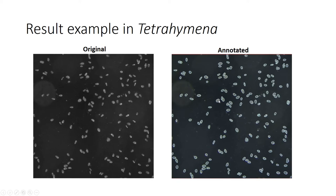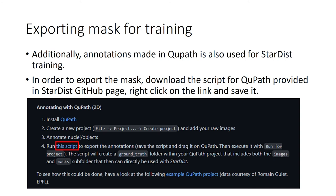This is the annotation result example. For Tetrahymena there will be an outline covering the cells you have selected. If there are cells not yet selected, you can go back to them after finishing annotating most of the cells. To use the annotation result for training in StarDist, you can open the StarDist GitHub page under 'Annotating with QPath 2D,' which provides the steps for annotation and a downloadable script — just follow the instructions provided by the StarDist developer.